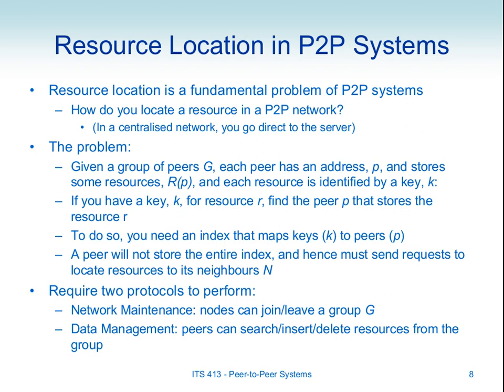We'll generally talk about a resource — the best example is a file, but it doesn't have to be; the resource can be some compute capability, some capability of a computer to perform some operations. In a centralized network, to find a resource you go direct to the server. But in a peer-to-peer network those resources are spread around different computers, so how do you find it?